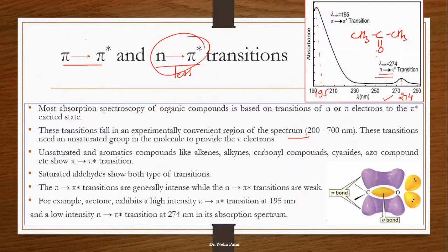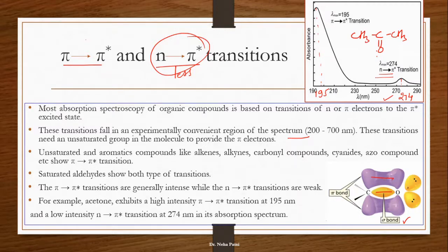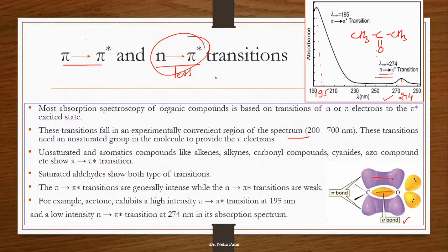You can also identify the transitions by absorbance intensity. The peak at 274 nm has quite low absorbance, confirming it is n→pi*, since n→pi* transitions are weak and give low intensity peaks. Pi→pi* transitions always show high intensity absorption. So the peak at 195 nm with high absorbance corresponds to pi→pi*. In summary, pi→pi* and n→pi* transitions are clearly visible in the UV range.